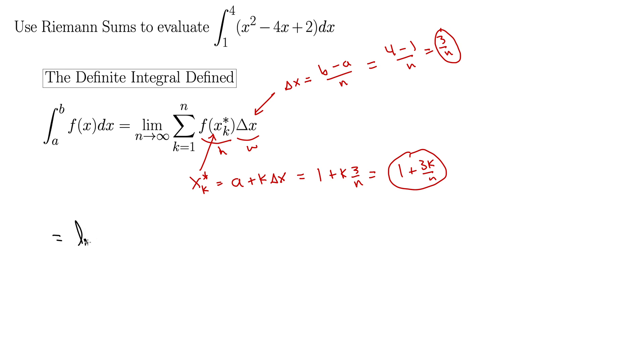So this integral is going to be the limit as n goes to infinity of the sum k equals 1 to n. f of xk star. Well, every time we see x in this function, we're going to replace it with 1 plus 3k over n. So replace it there and replace it there. So this becomes 1 plus 3k over n quantity squared minus 4 times 1 plus 3k over n plus 2. All of this is times delta x which we decided was 3 over n. So we've replaced our f of xk star and delta x here.